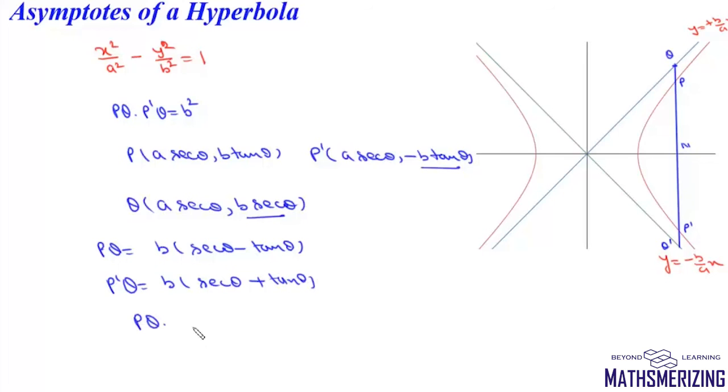We'll multiply them. PQ times P'Q will be b squared times (secant squared theta minus tan squared theta), which is simply 1. So we can write that this product PQ times P'Q equals b squared. In the same way, we can also prove that PQ' and P'Q' will also equal b squared.